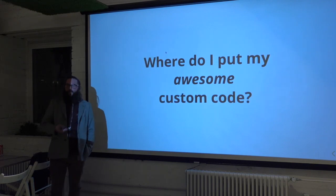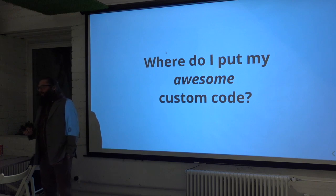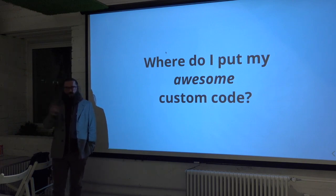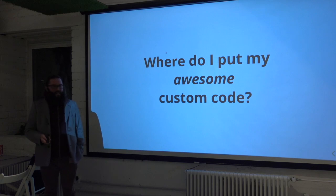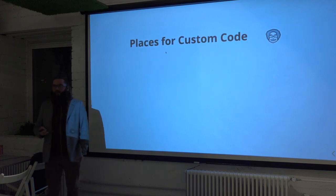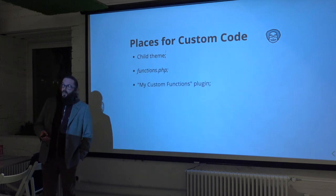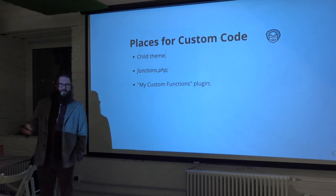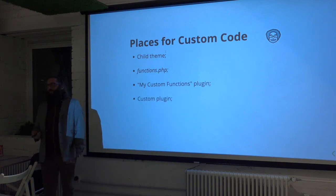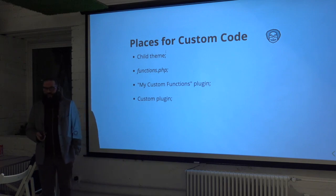So if we try to never modify those things, where do I put my code? The awesome code that I want to write just to make a button go ten pixels to the left? Well, there are several places: a child theme, a functions.php file, there is a plugin called My Custom Function — I probably shouldn't talk about that one, but let's talk about all of them — and also you can do a custom plugin. These should be your four options when extending WordPress. Some of them are better than others and I'll try to explain why.